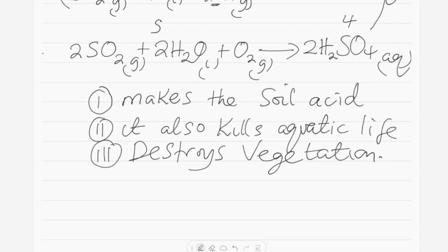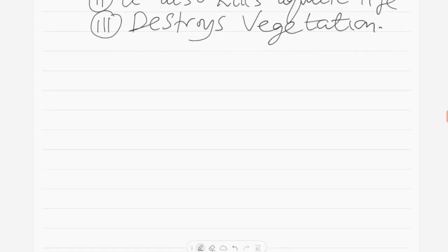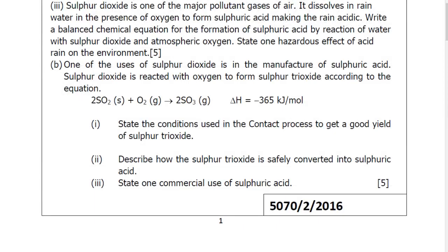We're now going to look at question B. One of the uses of sulfur dioxide is in the manufacture of sulfuric acid. Sulfur dioxide is reacted with oxygen to form sulfur trioxide according to the equation: SO2 gas reacting with O2 forming SO3. The delta H enthalpy change is negative 365 kilojoules per mole, meaning this reaction is exothermic. The question is: state the conditions used in the contact process to get a good yield of sulfur trioxide.